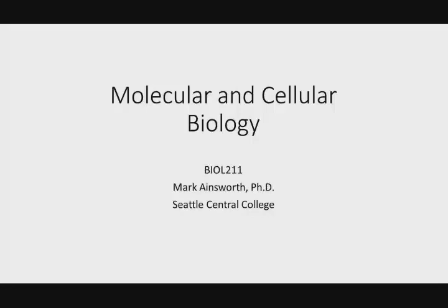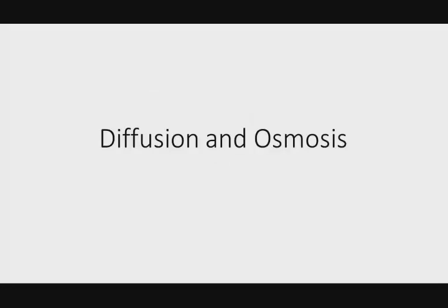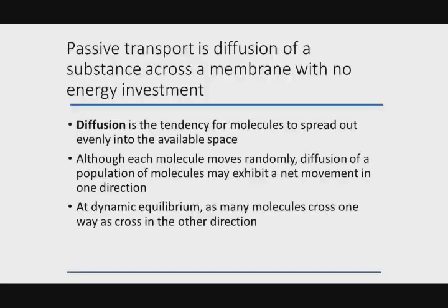So now we need to talk about diffusion and osmosis. This is one of our biggies in biology — this idea of diffusion, and then the special case of diffusion which we call osmosis: the diffusion of water from an area of high water concentration to an area of low water concentration. Diffusion is the tendency of things to move from areas of high concentration to areas of low concentration.